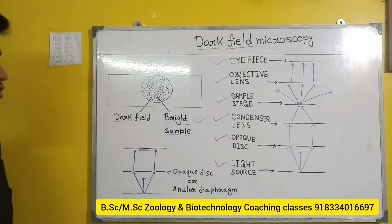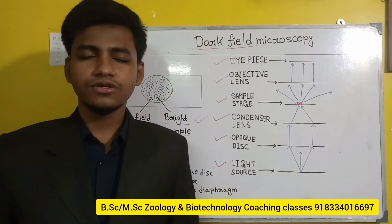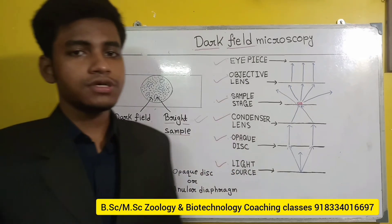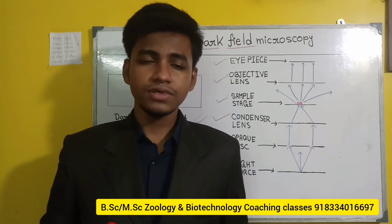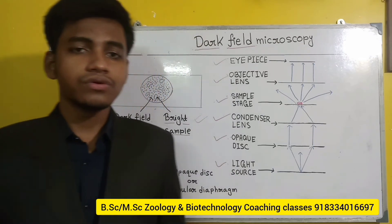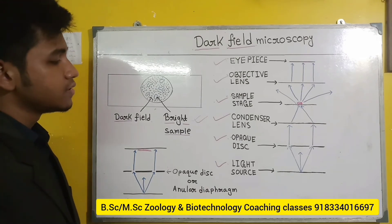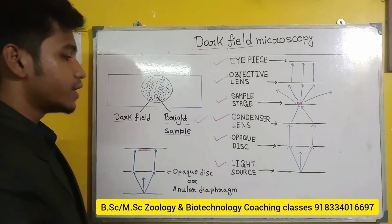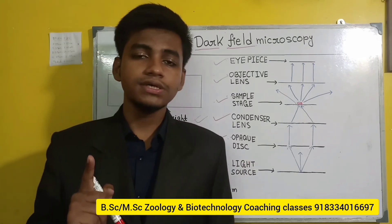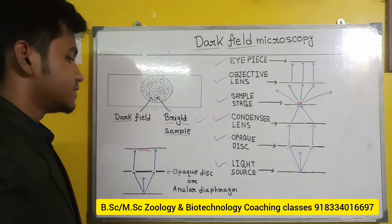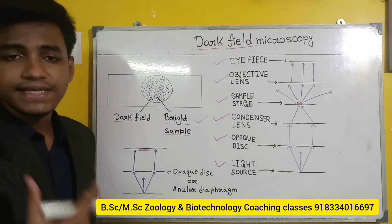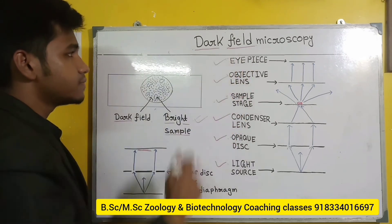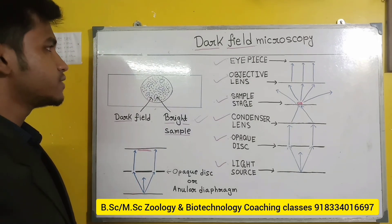This is the basic principle of dark field microscopy. Common exam questions from this topic are: write down the principle of dark field microscopy, or name the components of dark field microscopy. One important thing to note is that in bright field microscopy the opaque disc or annular diaphragm is absent, but in dark field microscopy it is present. Also, you do not need to stain the sample in dark field microscopy — this is an important advantage over bright field microscopy.